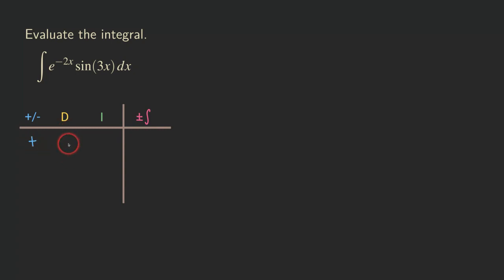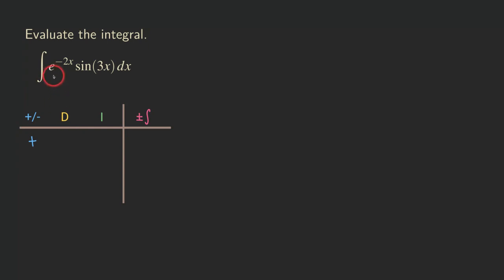Now for the differentiation column: we need to choose our function. For this particular type of problem — a product of an exponential function and a trig function — you don't really need to worry too much about which one you choose. You can choose the d column to be the exponential function or the trig function; it's really up to you. So I'm just going to let the u column be e to the negative 2x. And then the integration column, the dv column, is the sine of 3x.